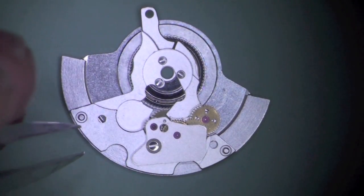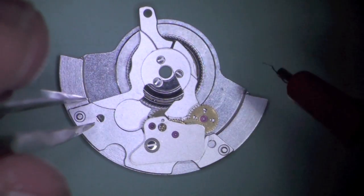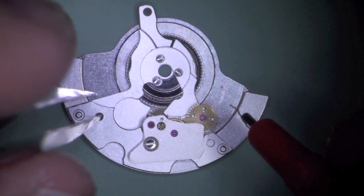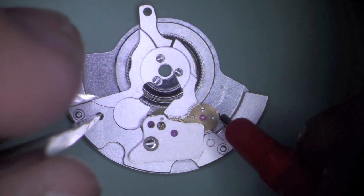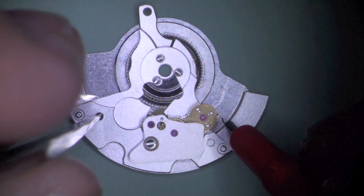This is a properly serviced 2892 automatic module. Due to the thinness and lower mass of the rotor on this model, extra care must be given to ensure proper freedom of the automatic train.